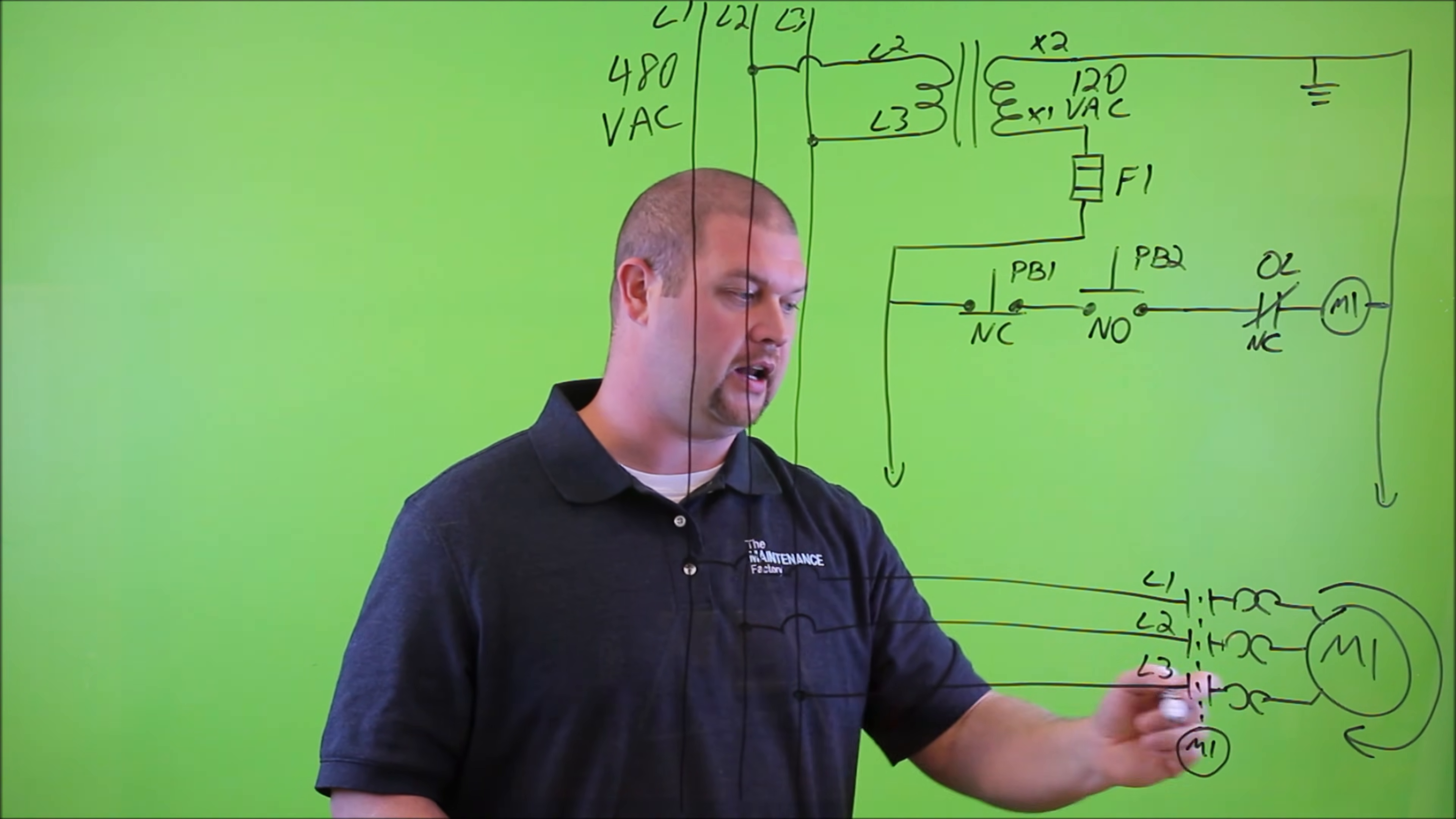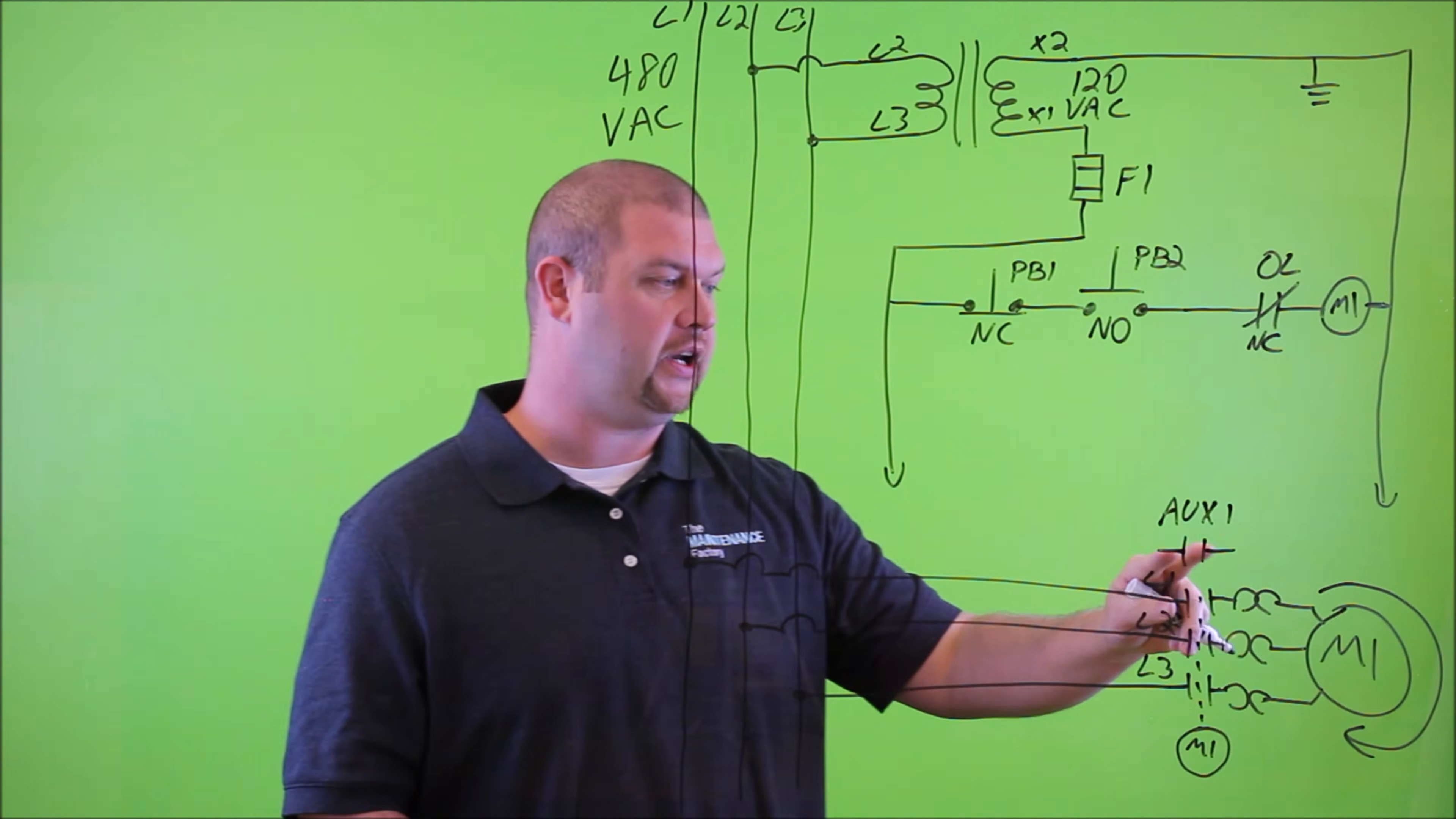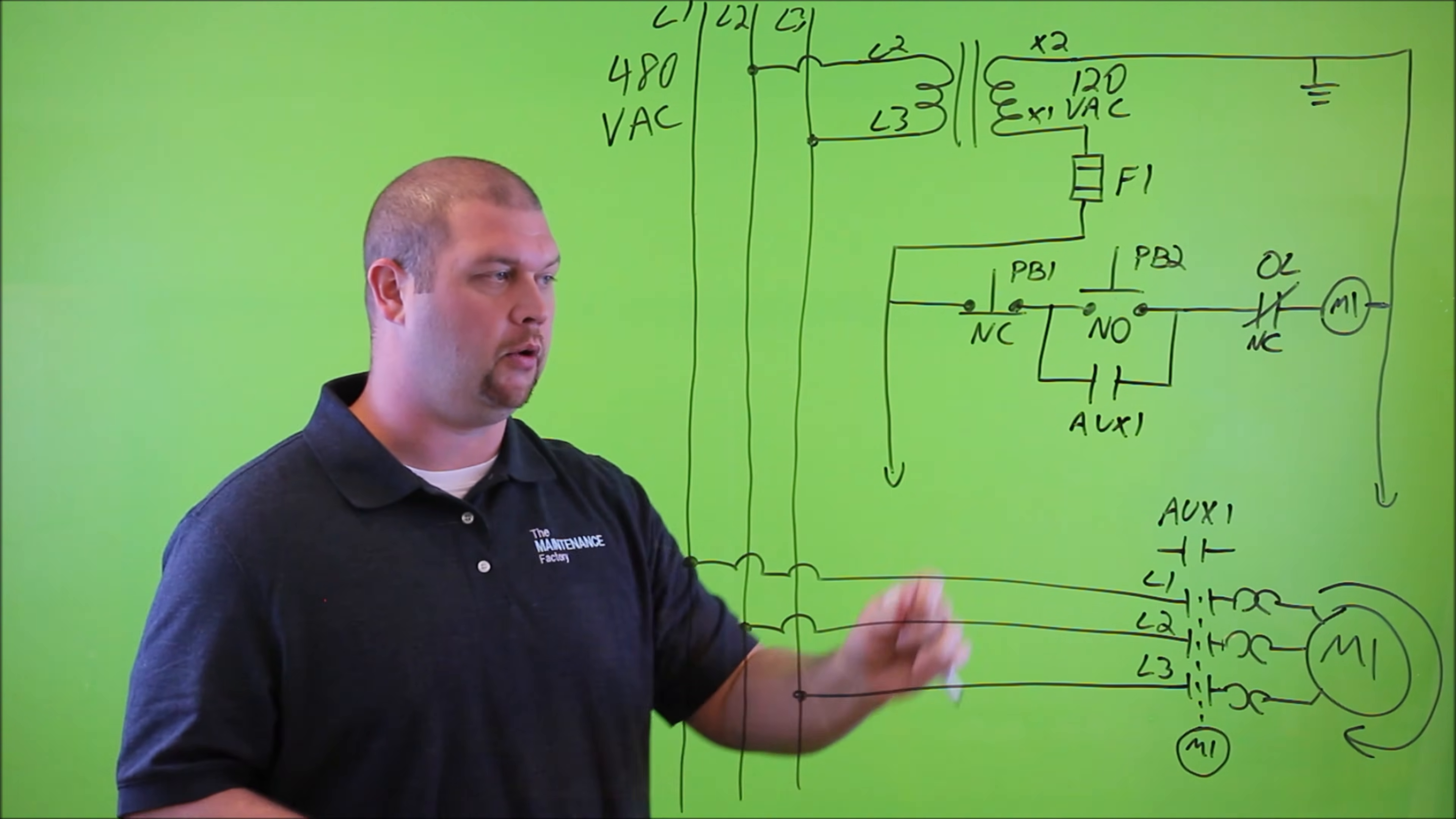And where we're going to get that at is from this contactor. This contactor off to the side will have another normally open auxiliary contact, and we're going to call it AUX1. Now, what we need to do is draw this auxiliary contact in parallel with the start button. So let's put it right here. And we'll label it AUX1.